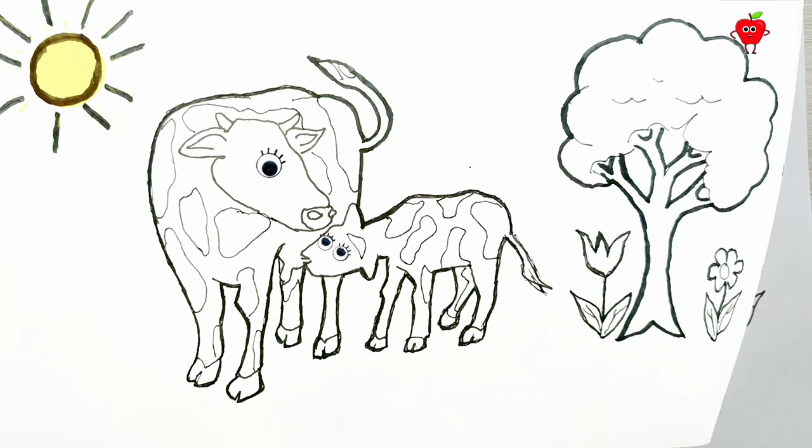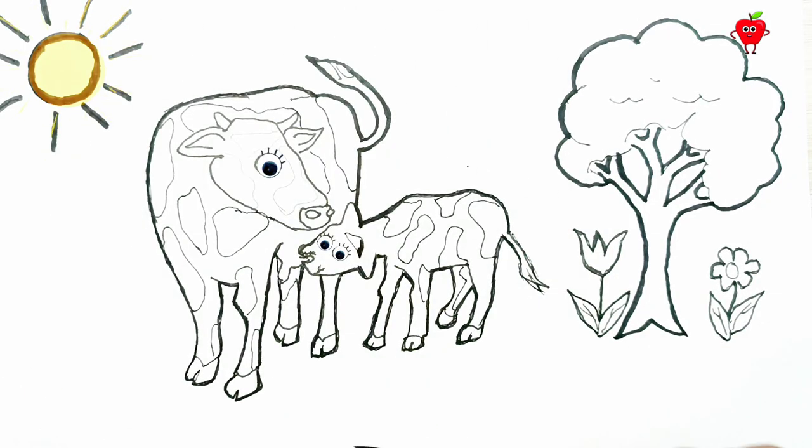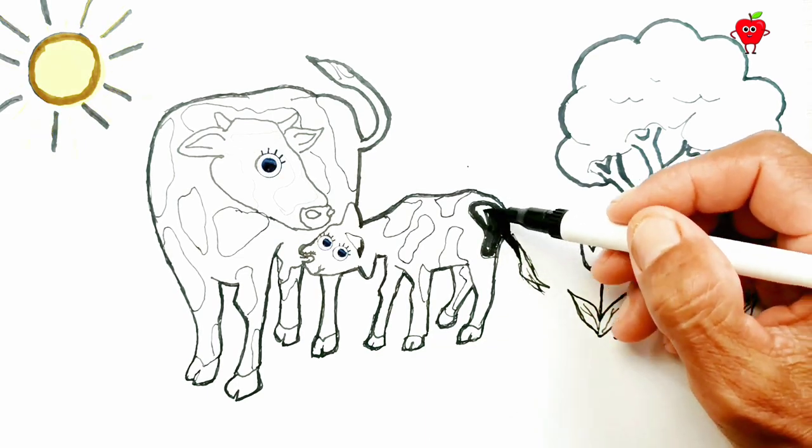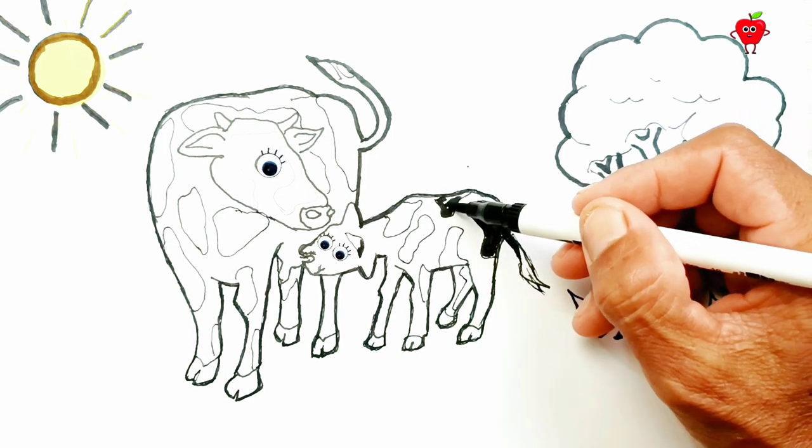Now is the time for us to color the painting of two cows and a natural landscape. Let's follow! First, we color the motif on the cow's body with black.